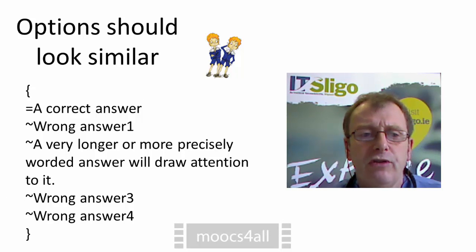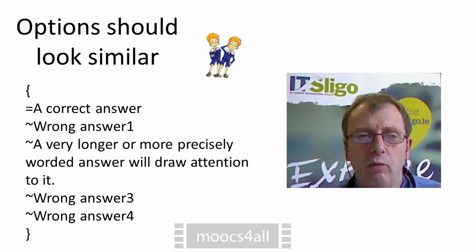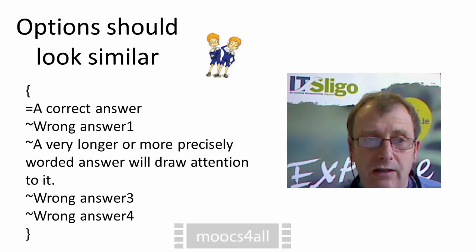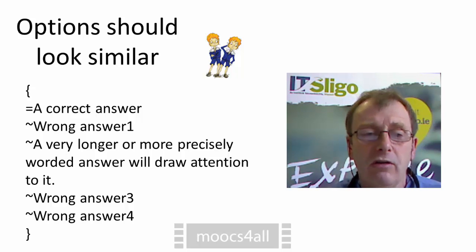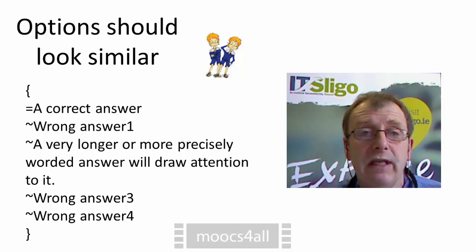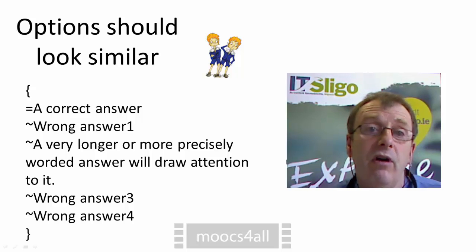The options should generally look similar, particularly in their length. If you have a correct answer, a wrong answer, a very long wrong answer, and a few other wrong answers, that long answer will draw students' attention. Generally people tend to write longer, more precise correct answers, but this draws students to them. So avoid writing longer correct answers. By the same token, avoid writing longer incorrect answers, as it will attract students away from the correct answer and make the question unnecessarily difficult or unfair.